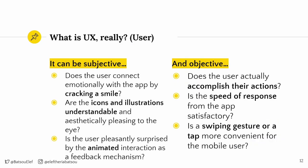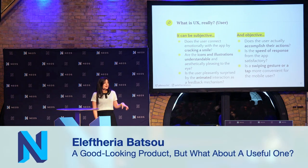From the designer's perspective, user interface is what you can see and interact with. User experience is what you can see alongside what you don't see — what holds everything together. UX has a lot to do with ease and satisfaction. It's a term that is always evolving, and it covers a lot of things. It can be subjective — does the user connect emotionally with the app, are the icons understandable, is the user pleasantly surprised by animation? And it can be objective — does the user accomplish what they wanted, and is the speed satisfactory?